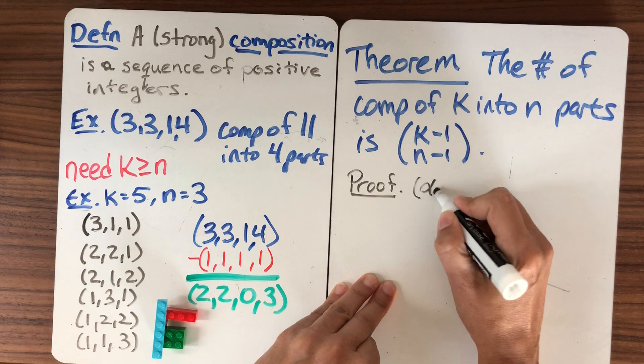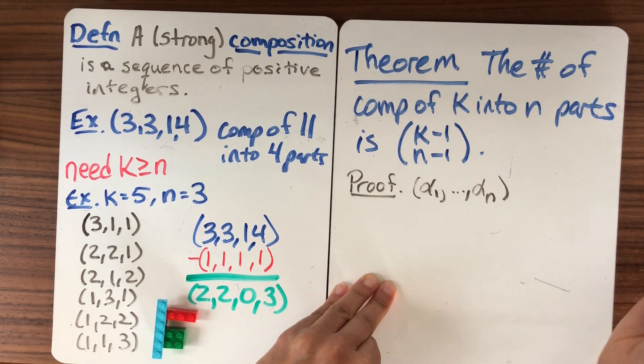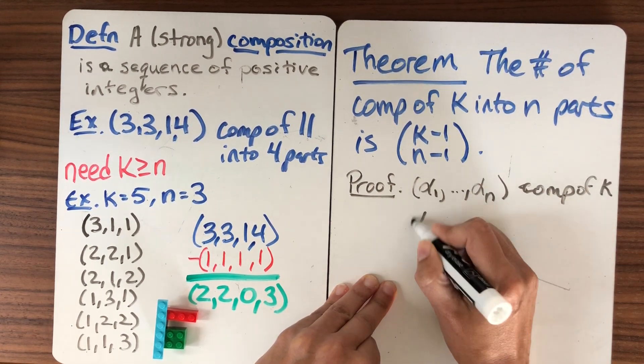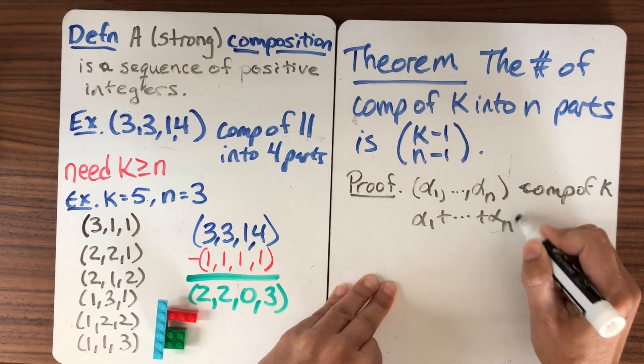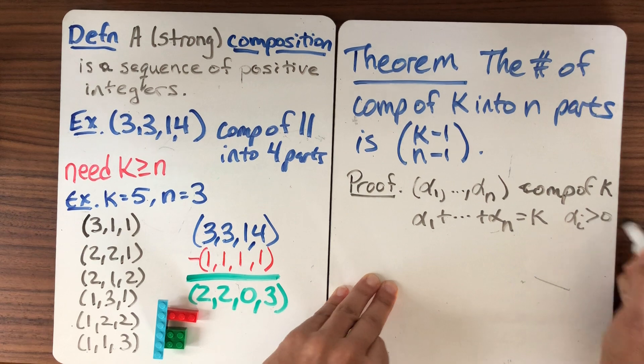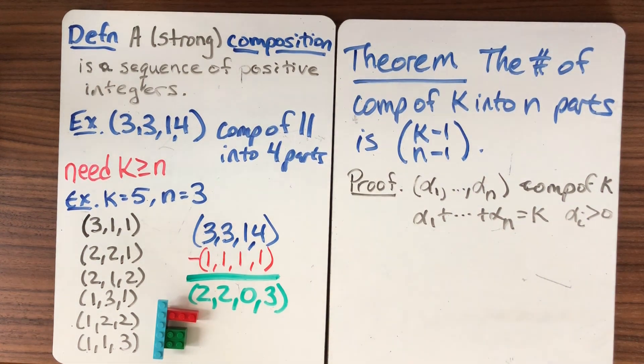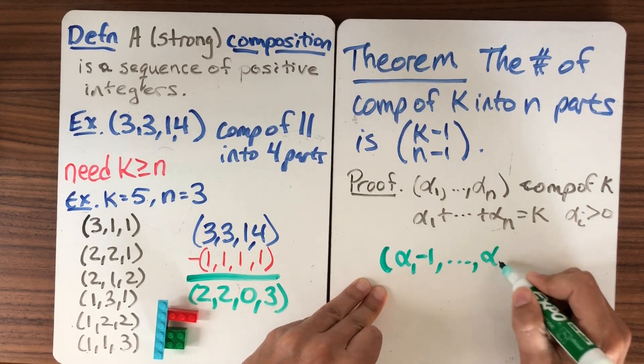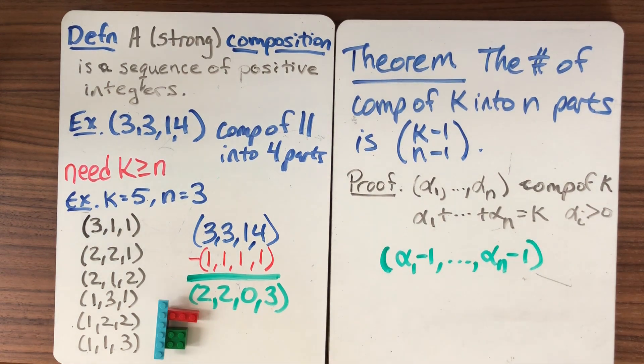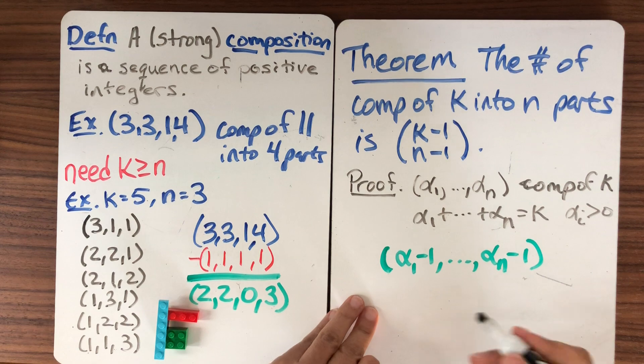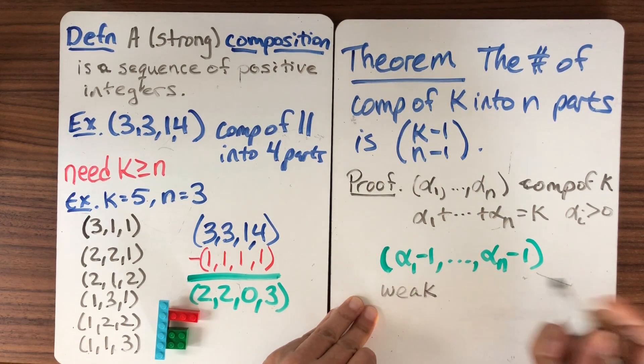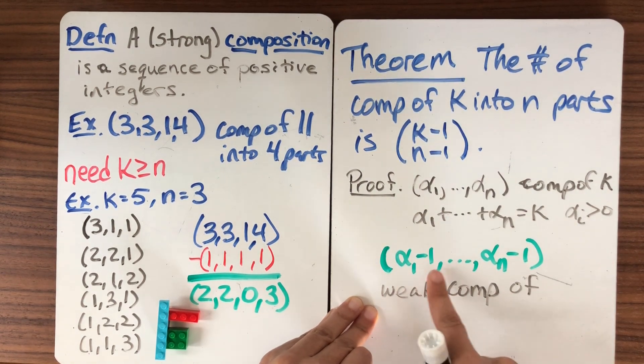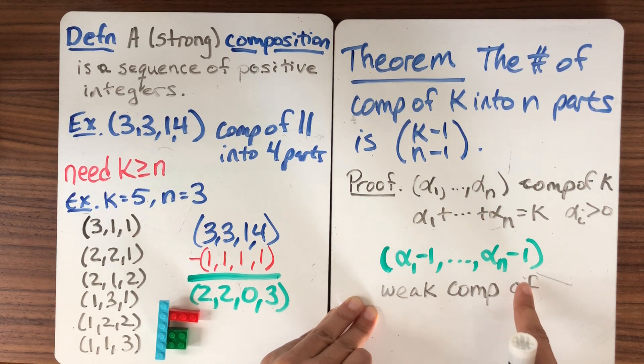So what we're going to do is we're going to use the strong compositions related to the weak compositions. So let α₁ up to αₙ be a composition of k. That means that α₁ + ... + αₙ equals k and each αᵢ is greater than zero. Now what I'm going to do is I'm going to consider the sequence α₁ - 1 all the way down to αₙ - 1. What is that? Well, it has the same length. This is now a weak composition. Weak doesn't mean you have to have a zero. It just means that you can. This is a weak composition of what?